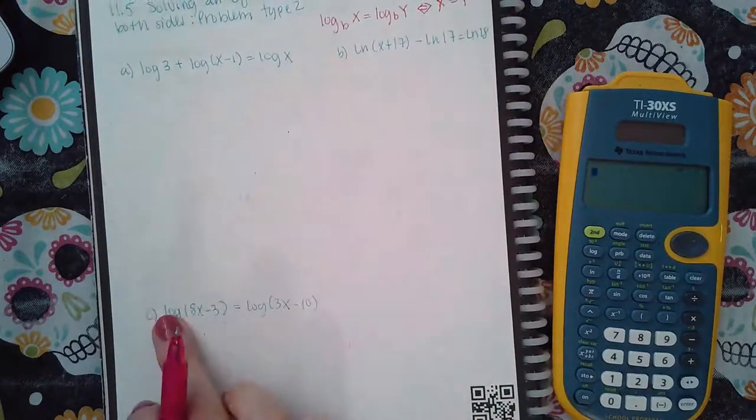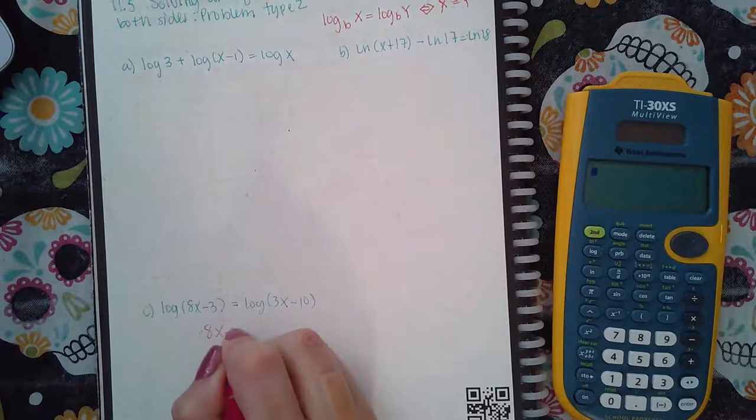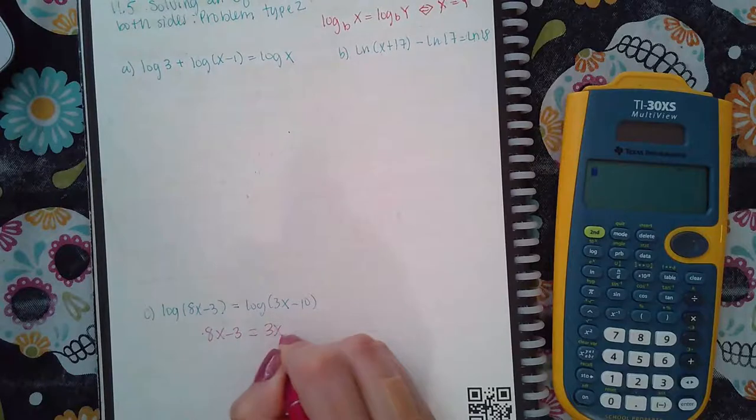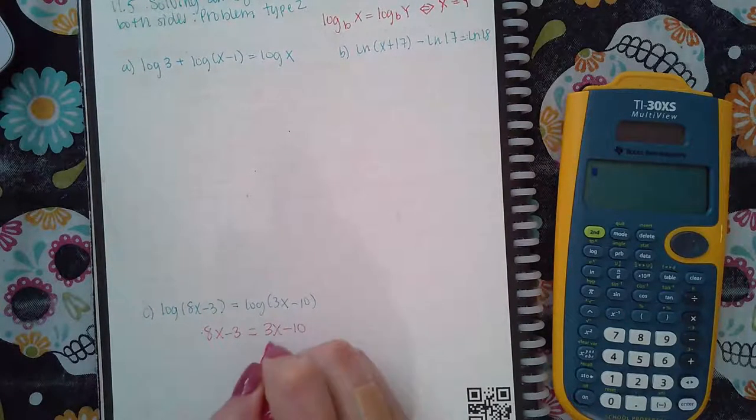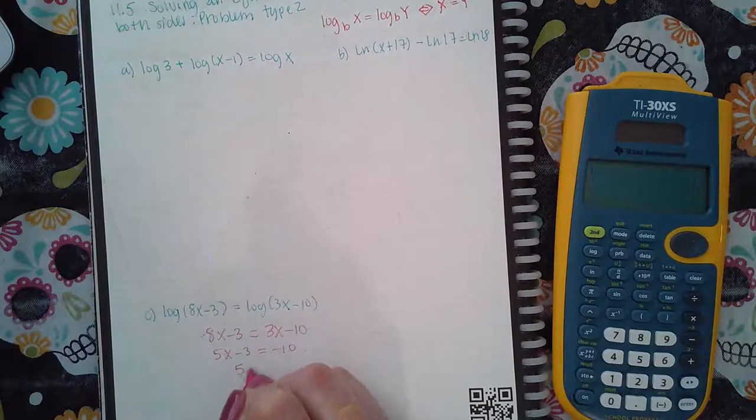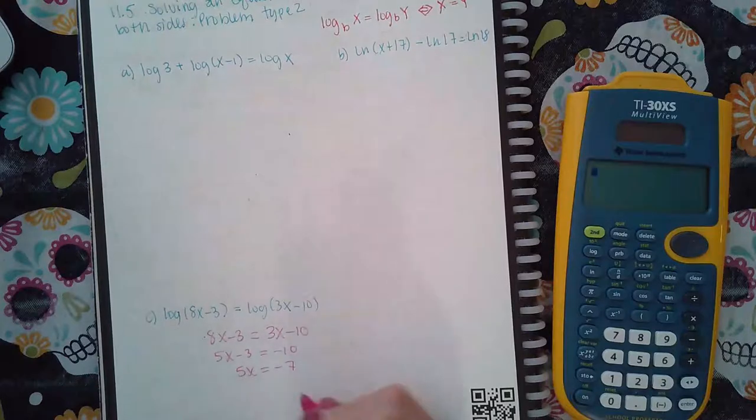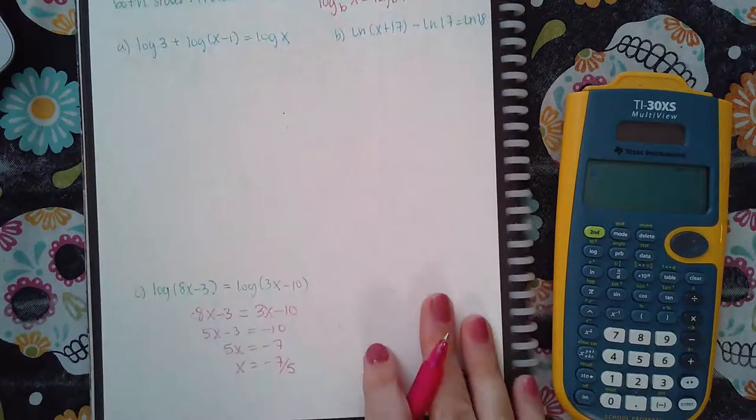So you would say then that means this argument would have to equal this argument in order for the left side to equal the right side. Then you can minus 3x over, then you can add 3 over, then you can divide by 5, and then you have your answer.